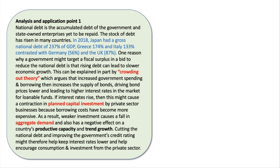Then some application: the stock of national debt has gone up in many countries. Just last year in 2018, Japan had a national debt of 237% of GDP, Greece 174%, Italy high — contrasted with Germany at 56%, and the UK around 85–87%. Let's get into our first point.